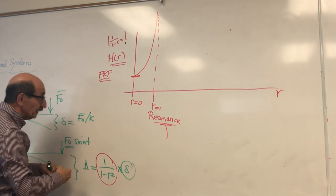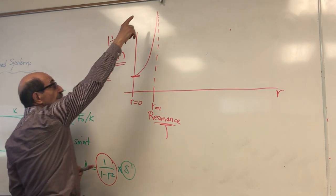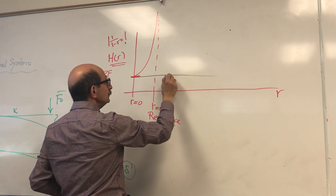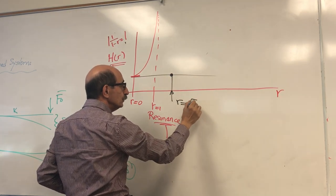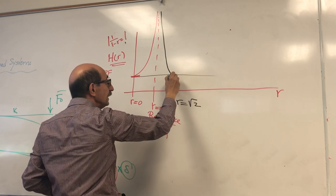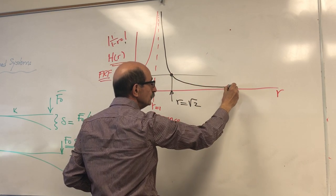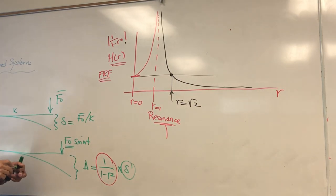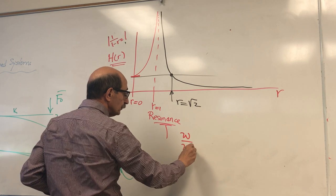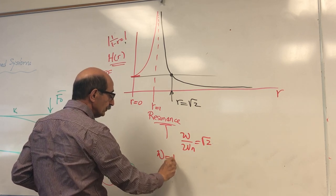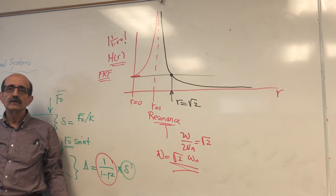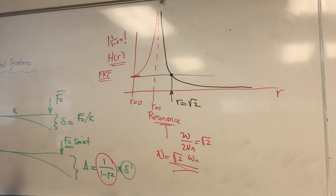As r increases beyond 1, we see that this is going to decrease. At another point — which is r equal to the square root of 2 — this becomes 1 again. So this increases, and then as r further increases, this goes eventually to 0 in the limit. At the frequency ratio — ratio of the forcing frequency over the natural frequency — being the square root of 2, or the forcing frequency is the square root of 2 times the natural frequency, the system behaves as if you have a static response.